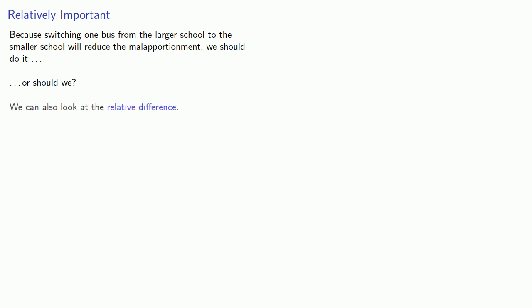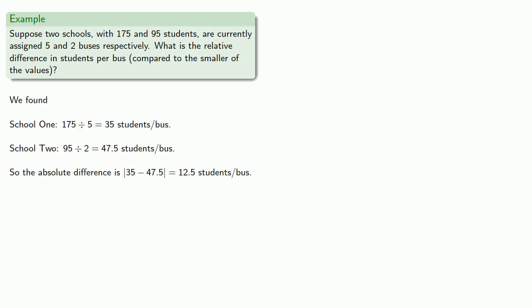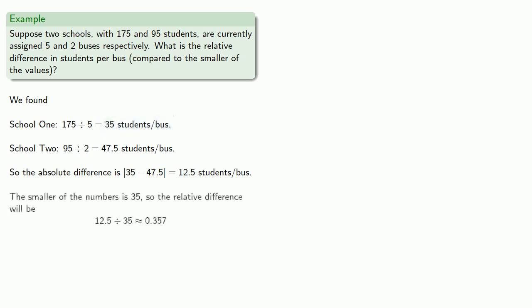The other way is we could look at the relative difference. This is the absolute difference divided by one of the quantities. Let's consider our scenario and find the relative difference in students per bus, comparing it to the smaller of the values. We've already computed the students per bus and the absolute difference. The relative difference is computed relative to the smaller of the values, which is 35 students per bus. So our relative difference is the absolute difference, 12.5, divided by the smaller number, 35.